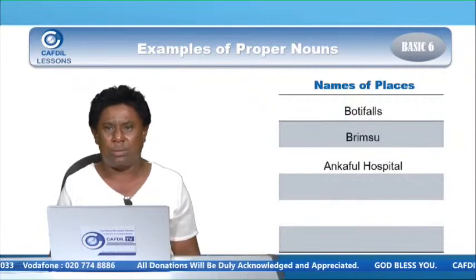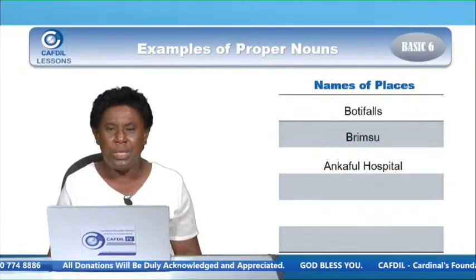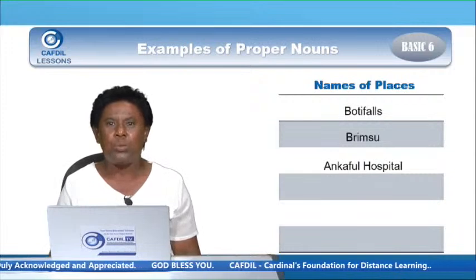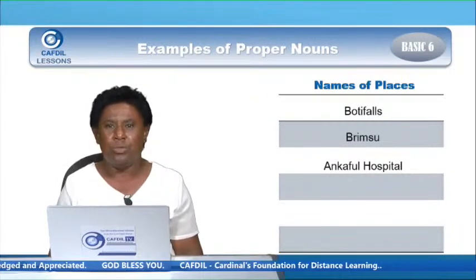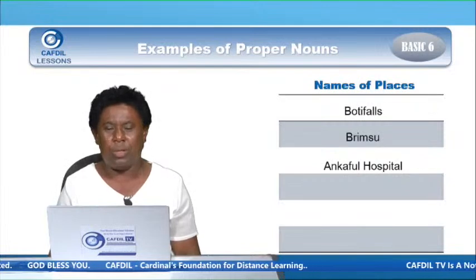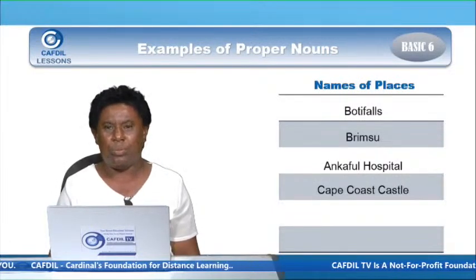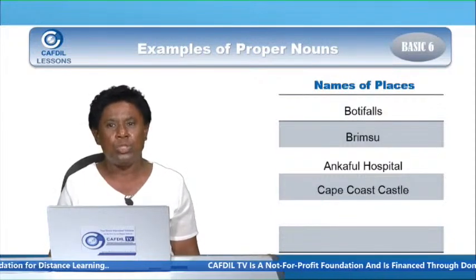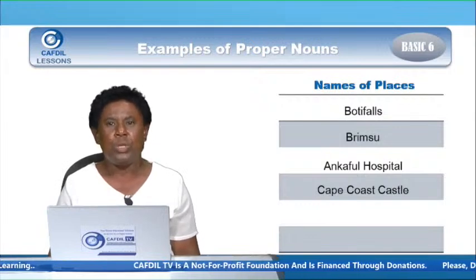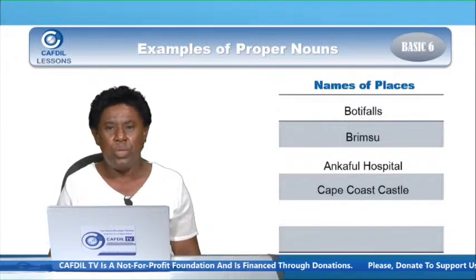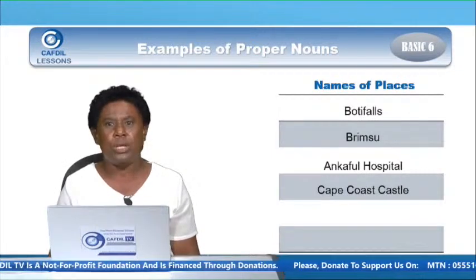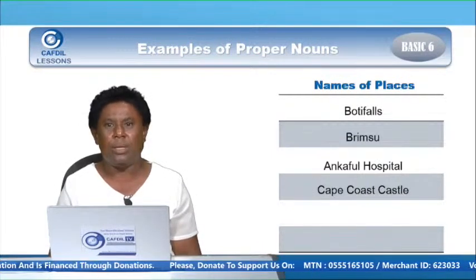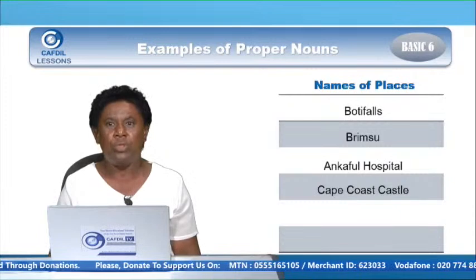Ankafo Hospital — there are a lot of hospitals, but this particular hospital has a particular name: Ankafo Hospital. It starts with capital A for Ankafo, capital H for hospital, because it's a proper noun. We also have Cape Coast Castle — it's a tourist site. A particular name given to that place: Cape — capital C, Coast — capital C, Castle — capital C. And it's a proper noun, a particular name given to a place.